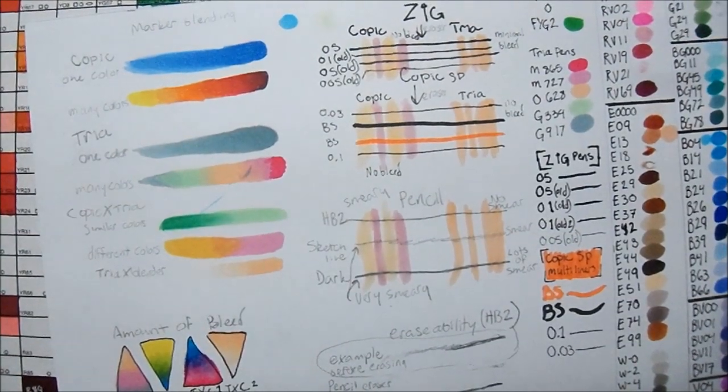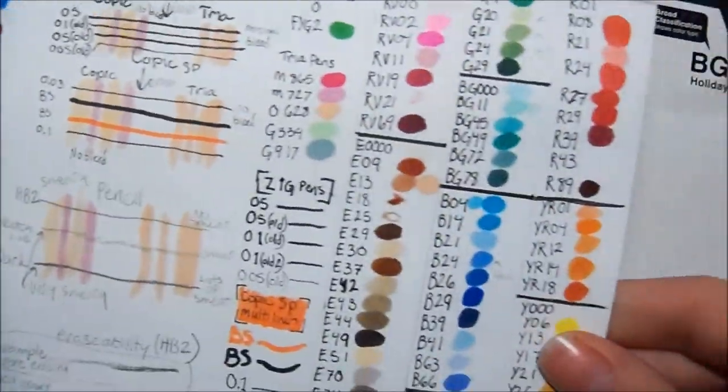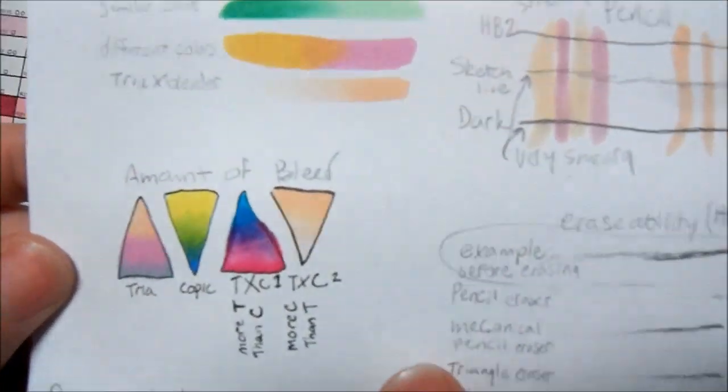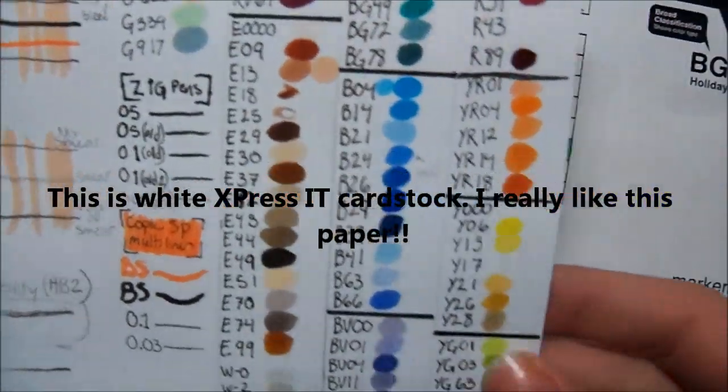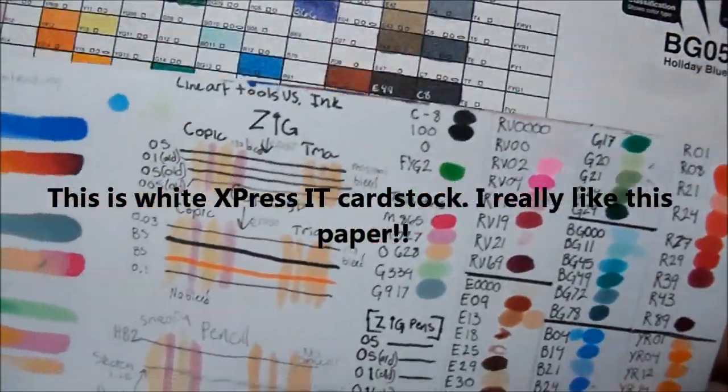Another good thing to do with Copic markers and any other type of marker or any medium that you use really is to make a practice sheet. Practice with the different colors, the different kinds of materials that you use.